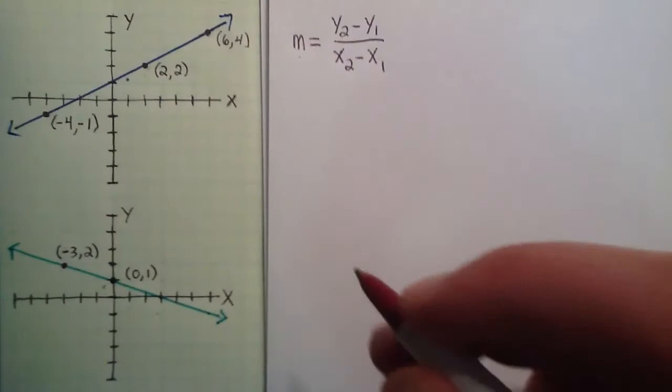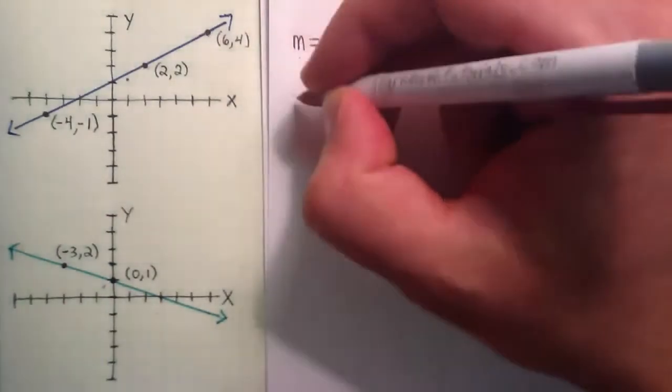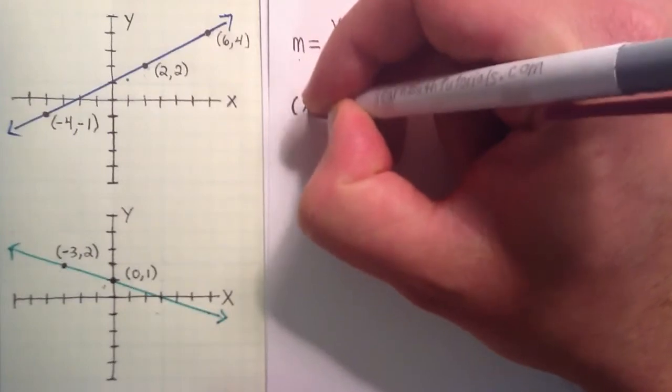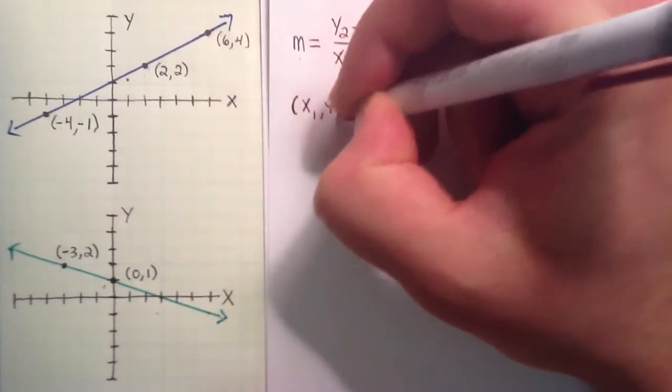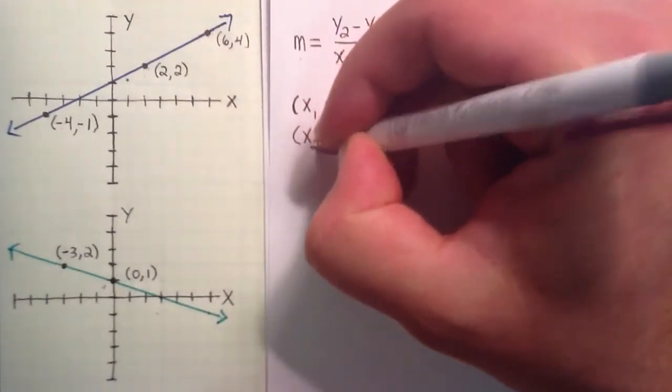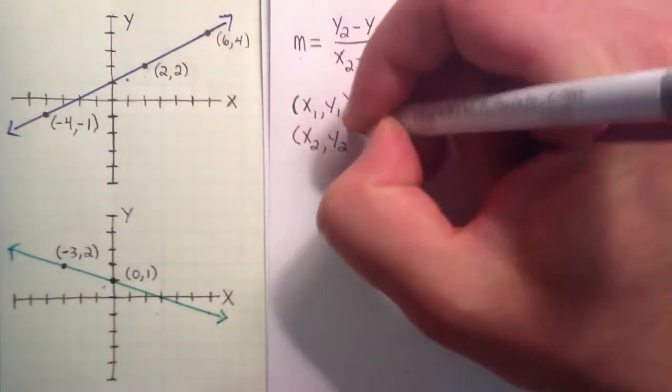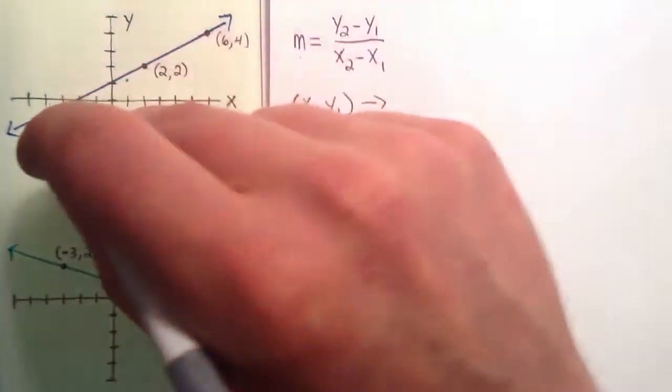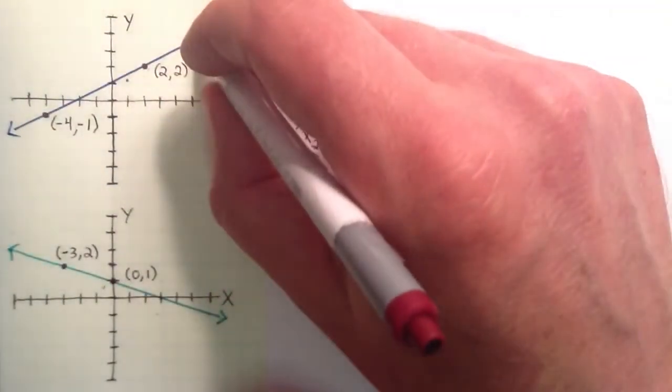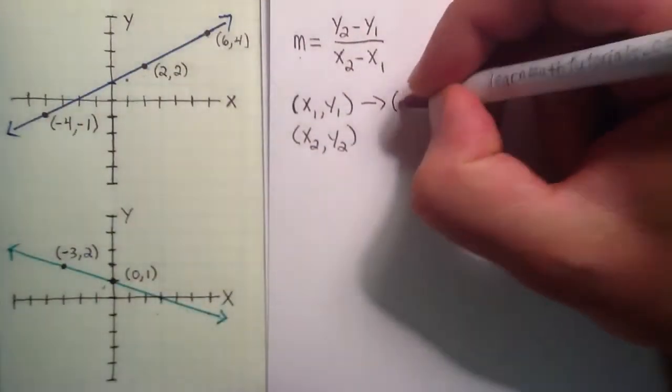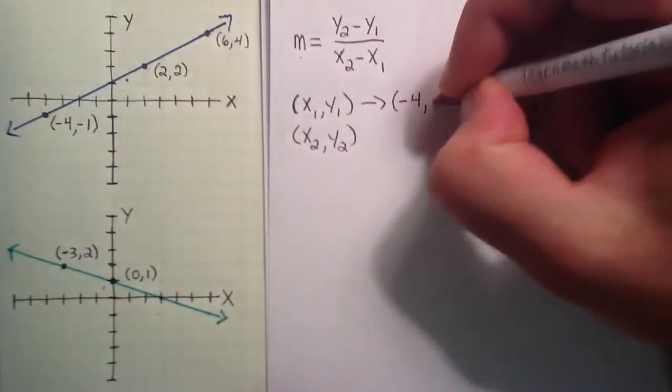So the first thing we need to do is we need to label two points. So one of our two points we're going to label x1, y1, and the second of our two points we're going to label x2, y2. So x1, y1, we can choose to be any of the points that fall on our line. So let's just go ahead and choose the first one I have listed here, negative 4, negative 1.